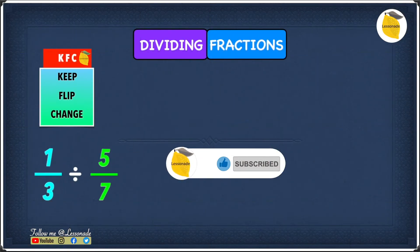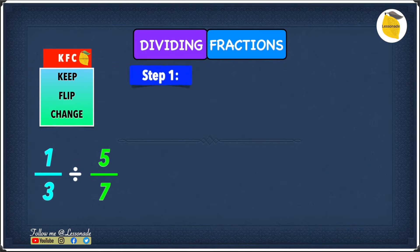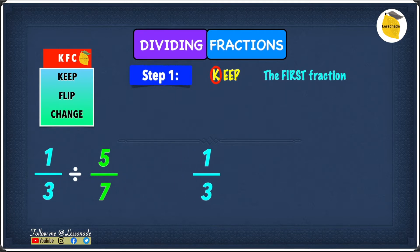Now let's see how to divide fractions using the method KFC. The example we have is 1 over 3 divided by 5 over 7. Step one is K, and K stands for Keep — keep the first fraction, which is 1 over 3, so we're going to keep it as it is.